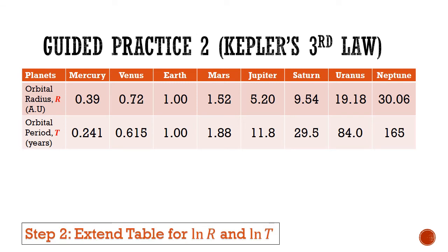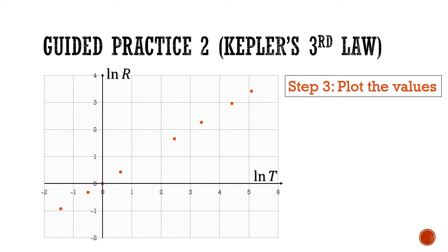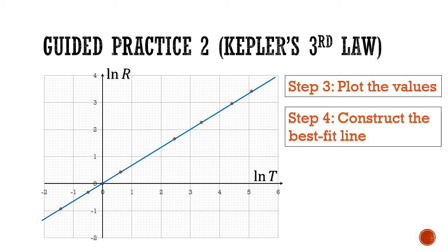Using a calculator, we evaluate the ln r and ln t values from the table. We then move to step 3, plotting these values on a piece of graph paper. In step 4, we plot the best fit line through the plotted points. Each orange dot represents a planet, and a straight blue line passes through all eight points.